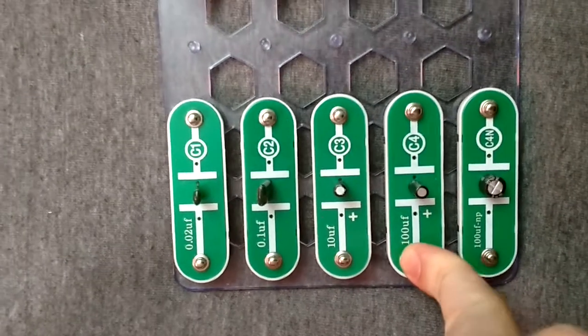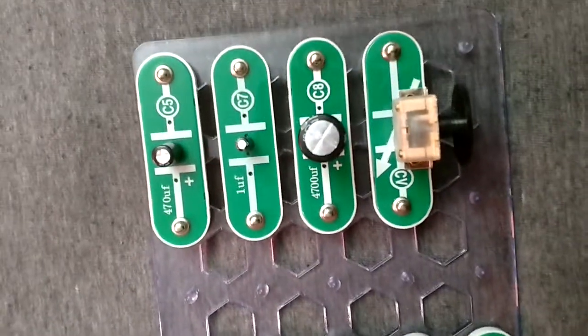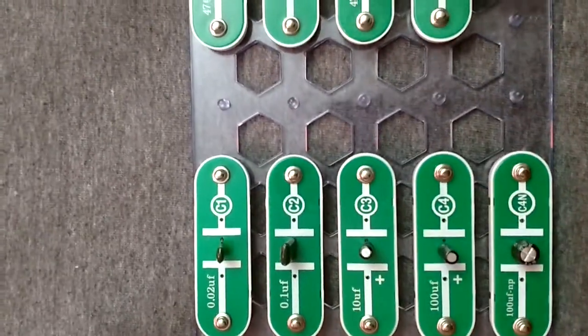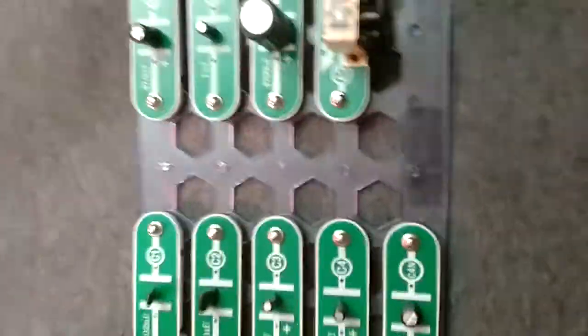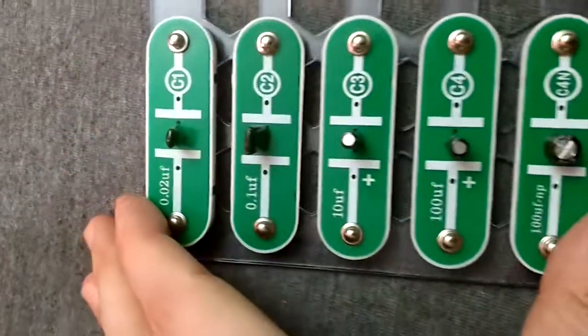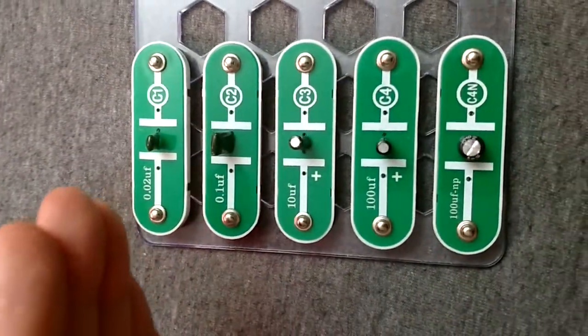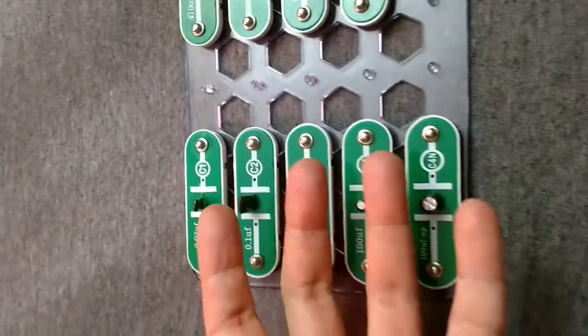But if you put these in backwards, it could blow them up, definitely gonna kill them, burn a hole in there—voltage leakage, all kinds of weird stuff to your circuit. So basically what it is, is let's say metal fingers on one side...